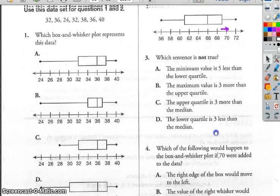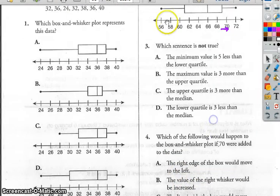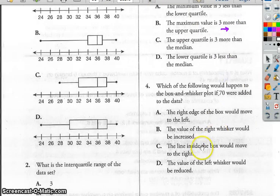The line inside the box would move to the right. Yeah, it would. The value of the left whisker would be reduced. Well, that's just silly and ridiculous. If you put a 70 in there, why would that affect the whisker? It's not. So the only one that makes any kind of sense is that the median would move to the right. It would increase.